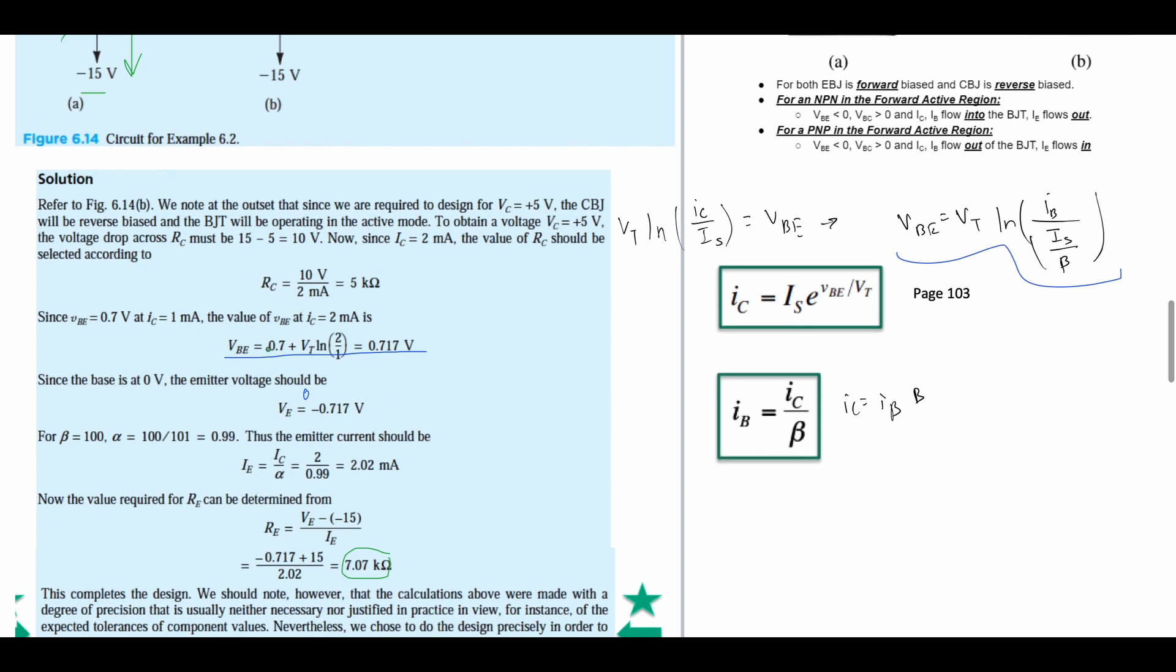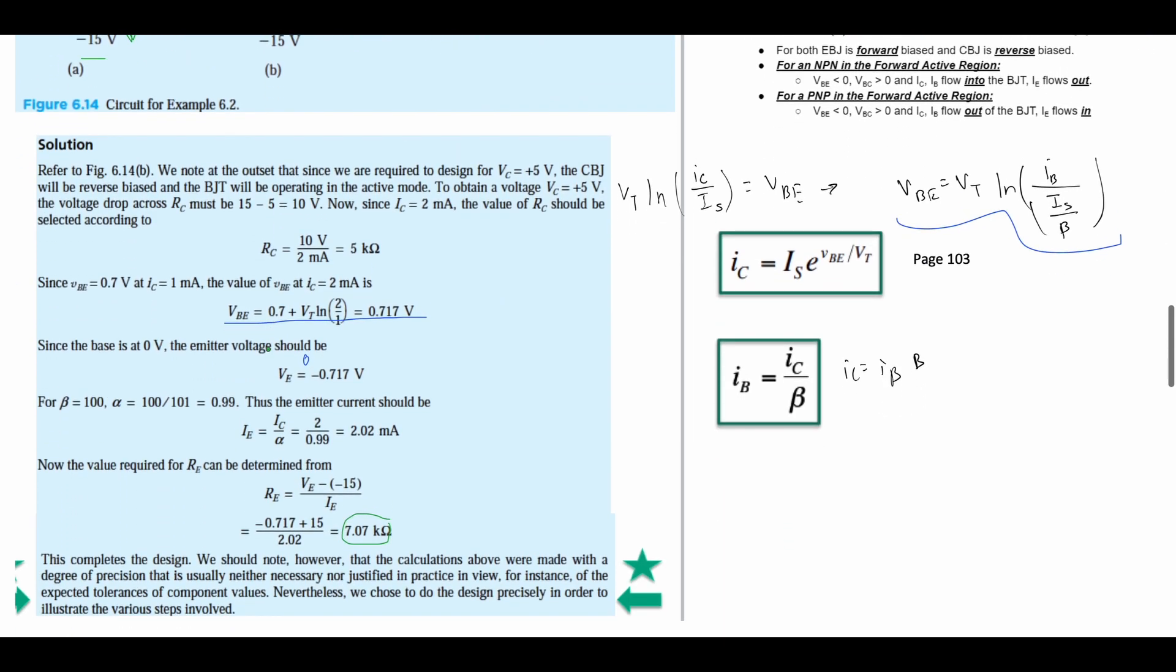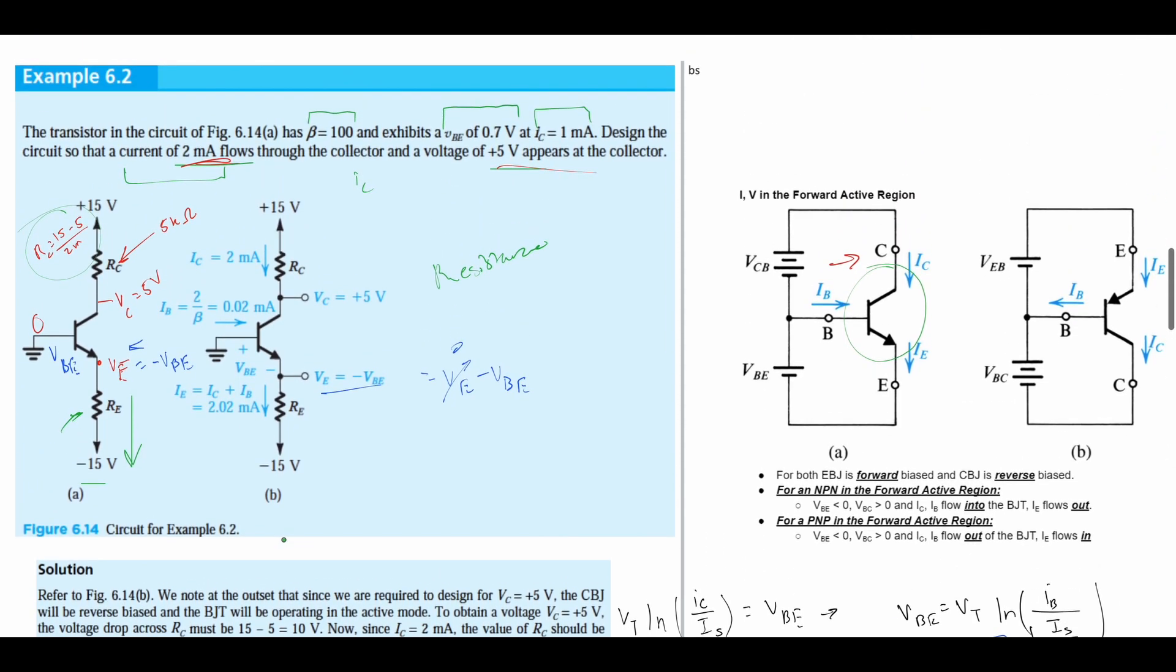So like the 0.717, that's not 100% necessary—it's very precise, but it's okay to be precise. That is how we would go about looking at and solving this problem step by step from top to bottom for an NPN transistor.